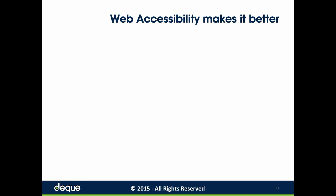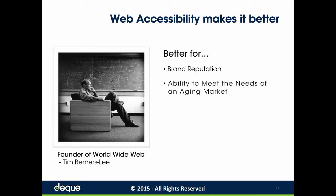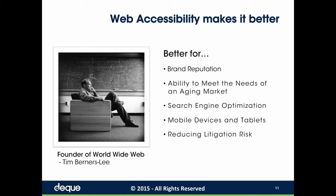The founder of the World Wide Web, Sir Tim Berners-Lee, always intended the web to be an open platform for society to connect, for better communication, and to build knowledge — a way to get information into the hands of all, not just a select privileged few. Building accessibility truly was his vision for bettering the globe. What can web accessibility do for your business? It betters your brand reputation, helps meet the needs of an ever-aging market, helps with search engine optimization, improves use across mobile devices and tablets, and reduces your litigation risk.